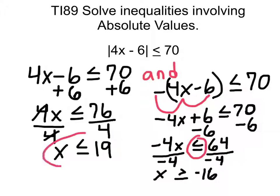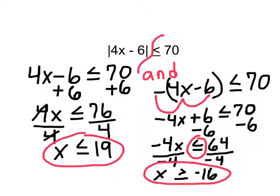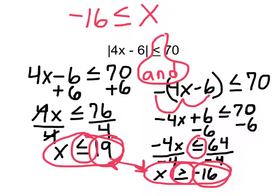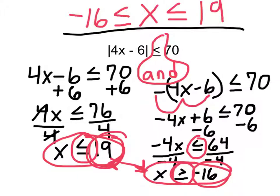So we have x is less than or equal to 19, and x is greater than or equal to negative 16. When we have a less than or equal sign, we associate the answer with the word AND. We take the lesser of the two numbers — in this case, negative 16 — and notice how the inequality is pointing to negative 16. Then we place x, with the inequality pointing towards x, and then our larger number 19. So our final answer is: negative 16 is less than or equal to x, which is less than or equal to 19.